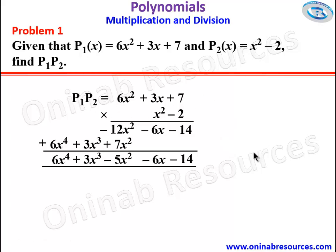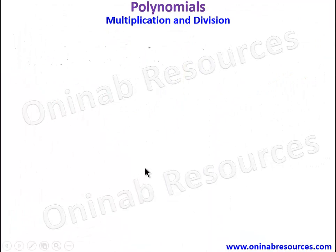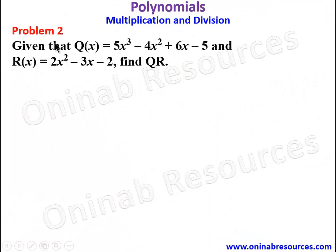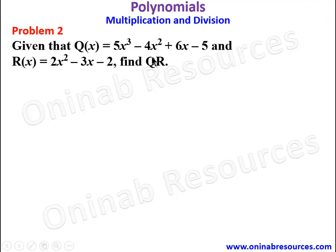So we go to problem 2. Given that q of x is equal to 5x cubed minus 4x squared plus 6x minus 5 and r of x is equal to 2x squared minus 3x minus 2, find q times r. So we are finding the product of q of x and r of x.